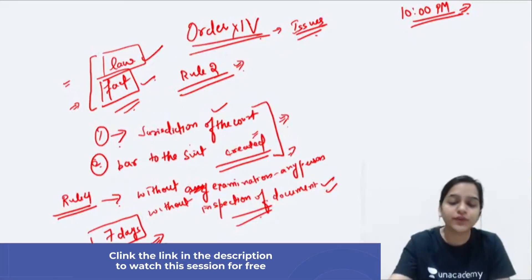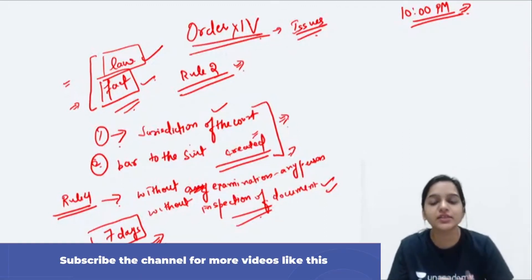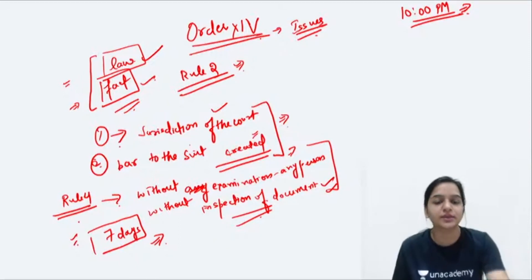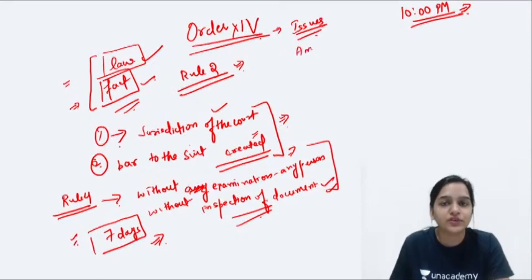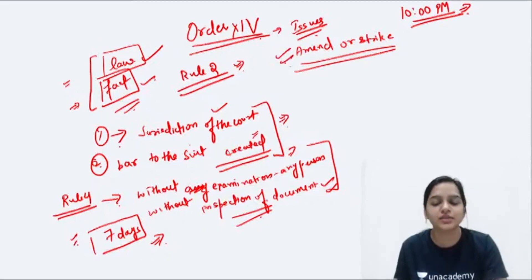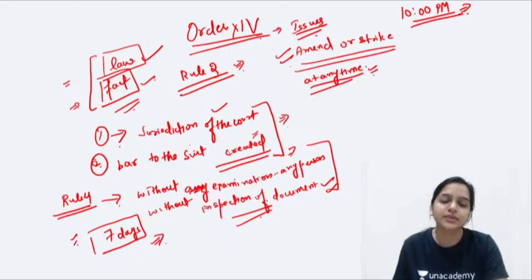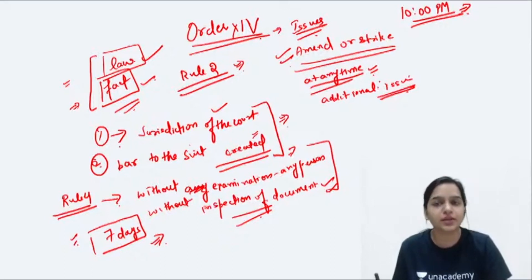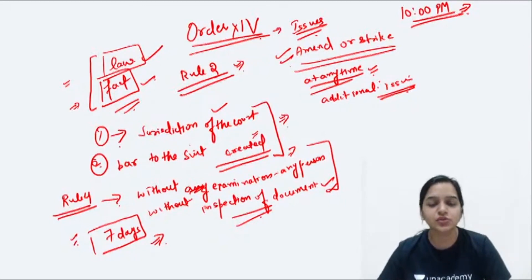Agar court ko lagta hai ki issues frame karne ke liye kisi person ki attendance ya kisi document ki inspection zaruri hai, toh court 7 din se zyada ke liye adjourn nahi kar sakti. Kya court ke paas powers hain ki woh amend ya strike out kar sakti hai issues? The answer is yes — the court may at any time amend kar sakti hai, ya frame kar sakti hai additional issues. Yeh court tab kar sakti hai jab usse lagta hai yeh zaruri hai for determining the matters in controversy between the parties. Sirf wahan par court amend ya strike out kar sakti hai issues, otherwise the court cannot.